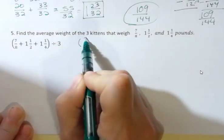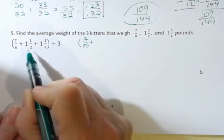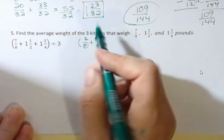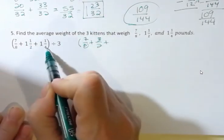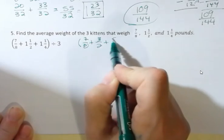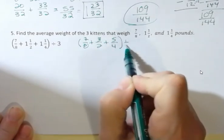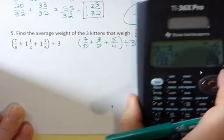So it looks like seven eighths, and this is one times two is two plus one is three, three halves. One times four is four plus one is five, five fourths, and then I'm going to divide by three. Let's do that piece on our calculator.